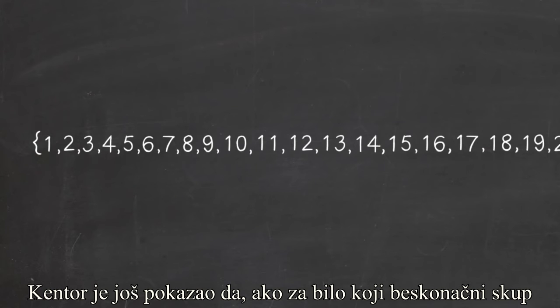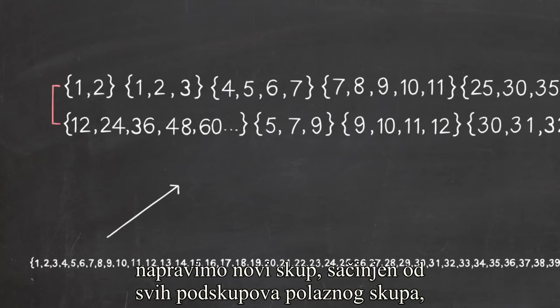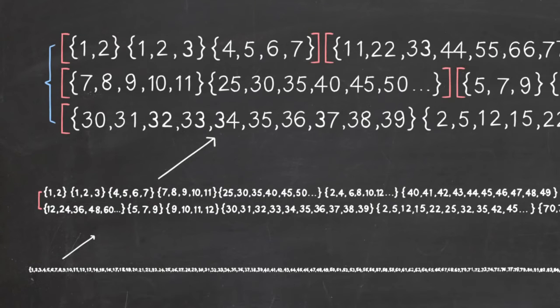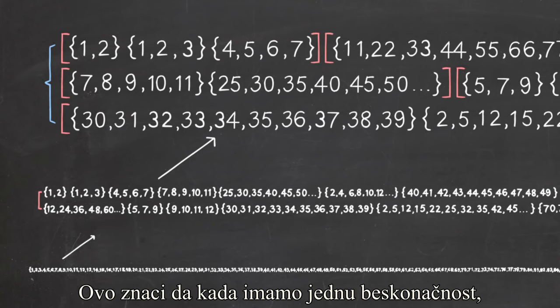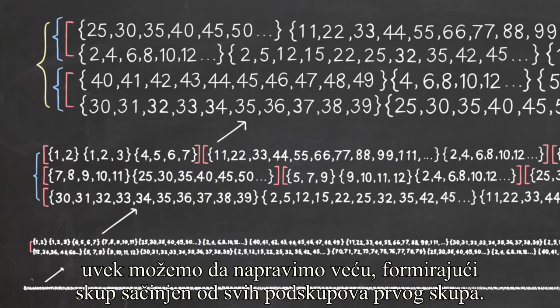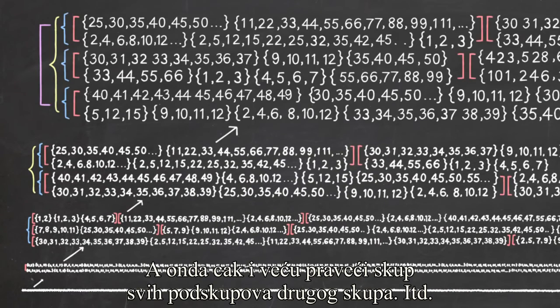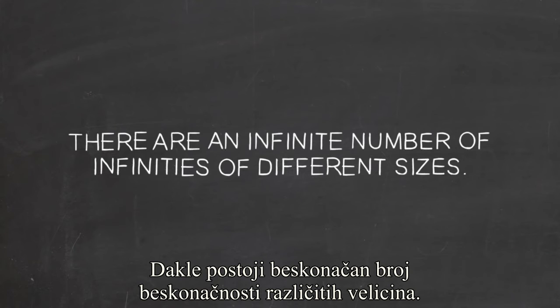Cantor also showed that for any infinite set, forming a new set made of all the subsets of the original set represents a bigger infinity than that original set. This means that once you have one infinity, you can always make a bigger one by making the set of all subsets of that first set, and then an even bigger one by making the set of all subsets of that one, and so on. And so, there are an infinite number of infinities of different sizes.